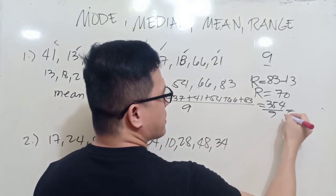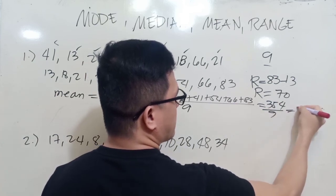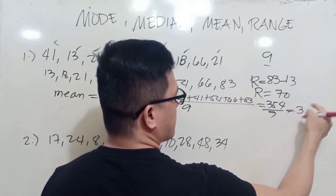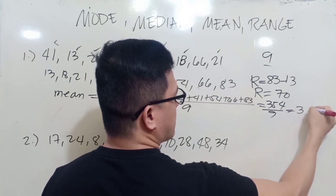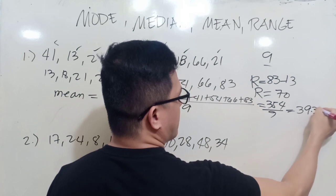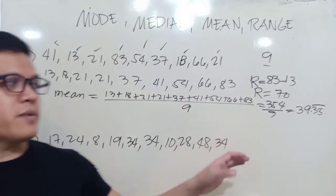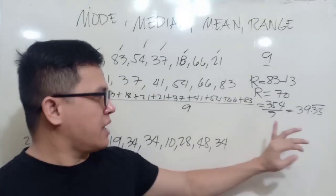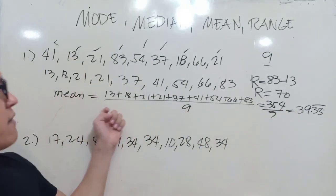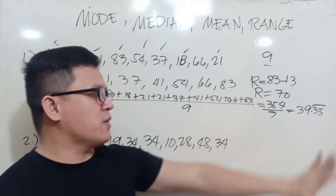This is 354 divided by 9. So 354 divided by 9, this is almost 10 anyway. We have 3, 7, 9. It's continuous, non-terminating. Our mean or the average, or simply we call it average, is 39.33.